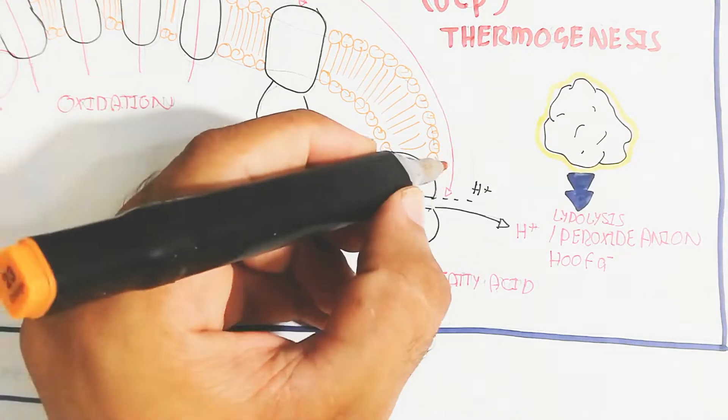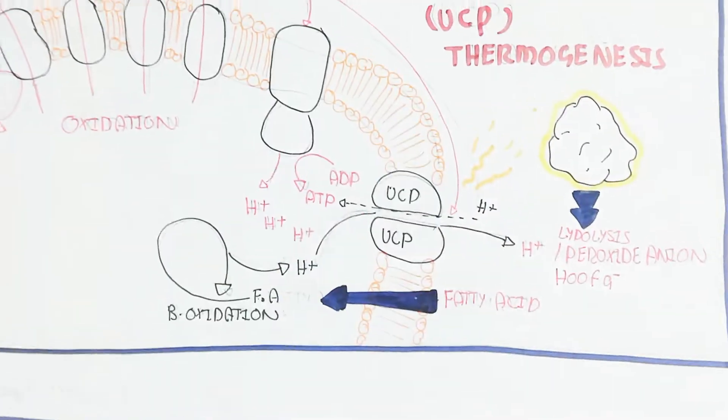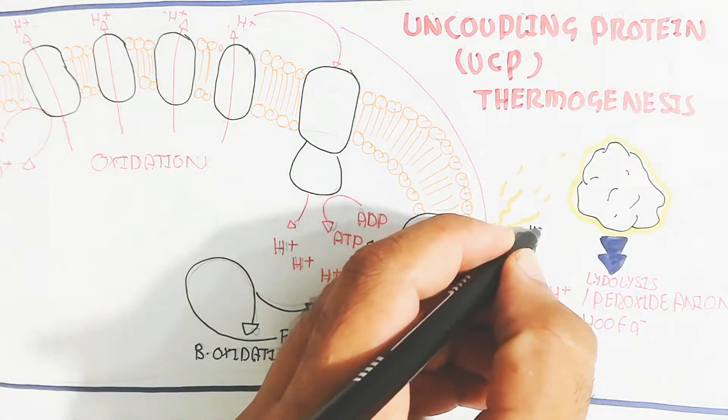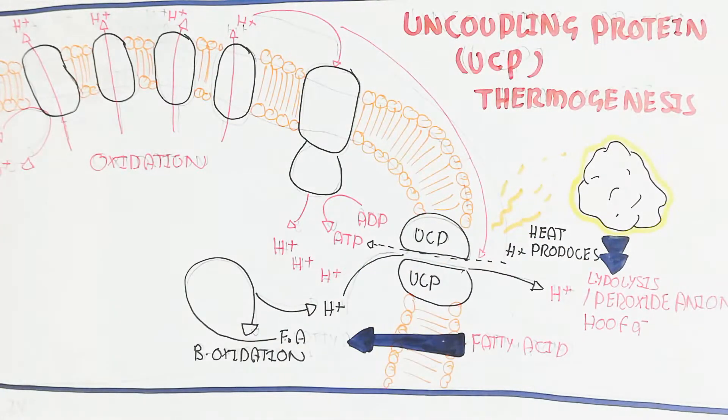And in this way, the beta oxidation will produce more protons as well as the production of acetyl-CoA from the beta oxidation of fatty acid.